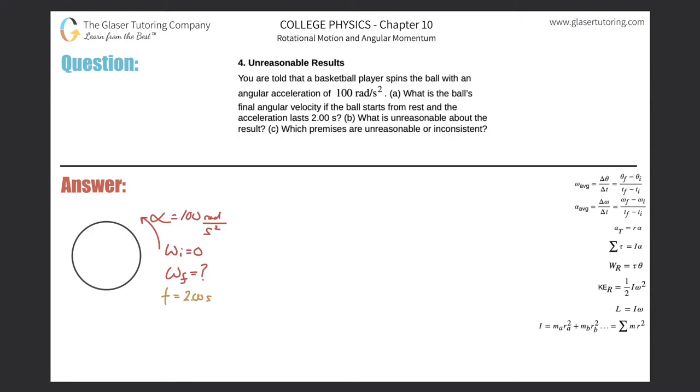Number four, unreasonable results. You're told that a basketball player spins the ball with an angular acceleration of 100 radians per second squared. Letter A,